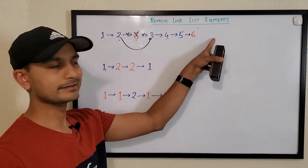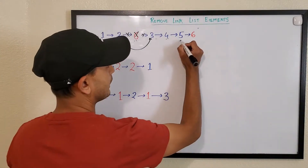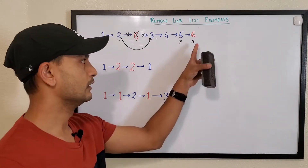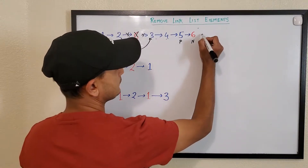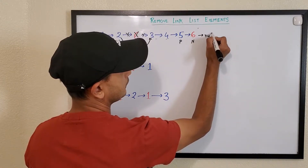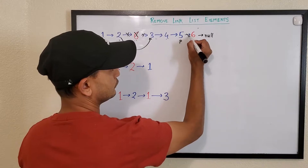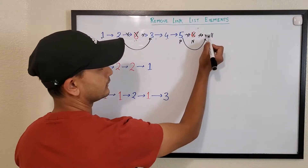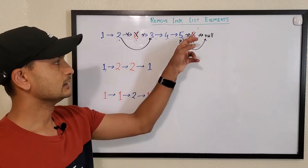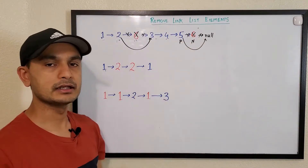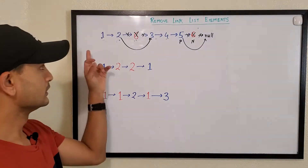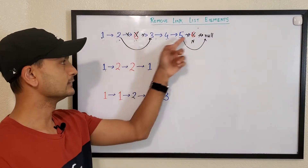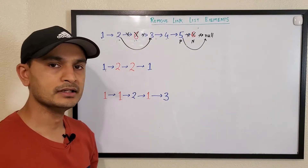For the last node case: node is at the final six and its next is null. We set previous.next to null, which removes that trailing six. That's how we handle removing an element that is the last node in the list. Applying this logic throughout removes all sixes from the list.